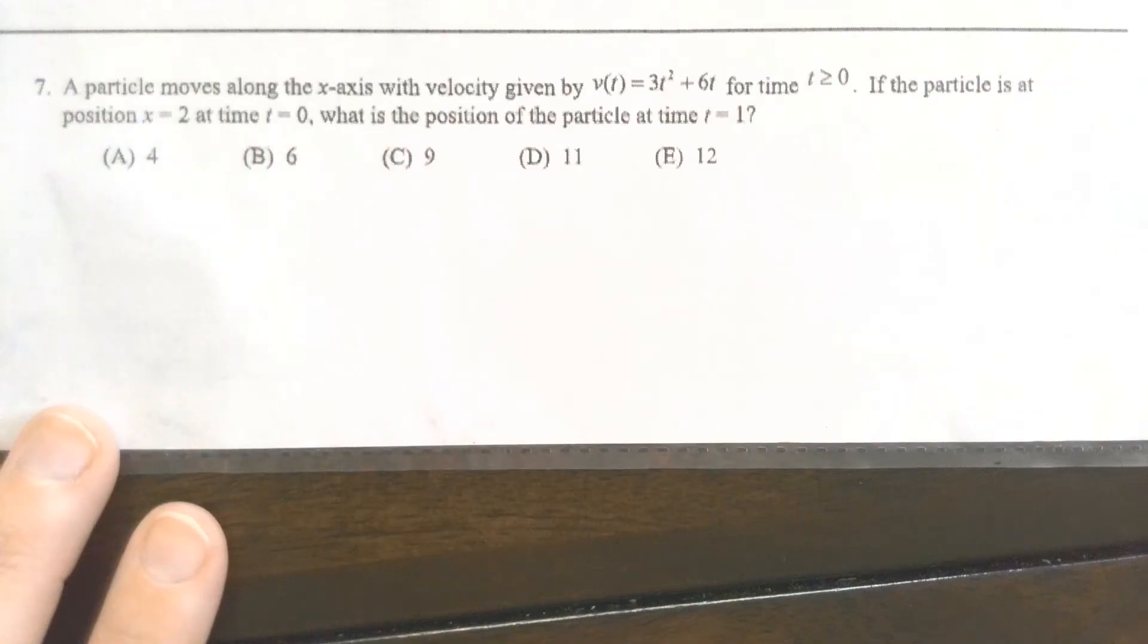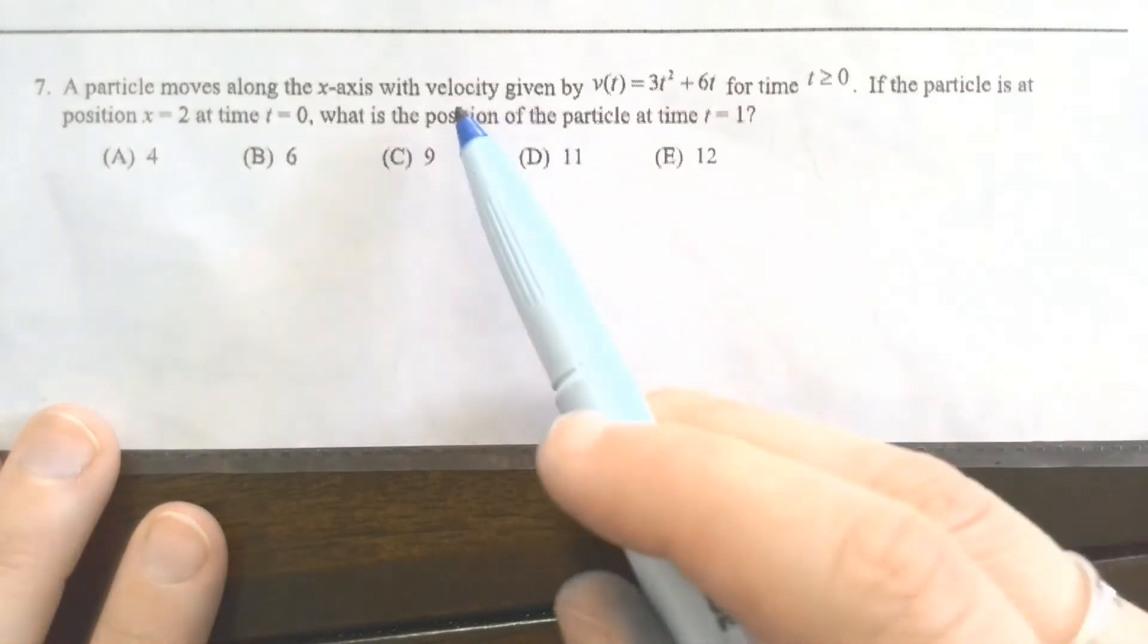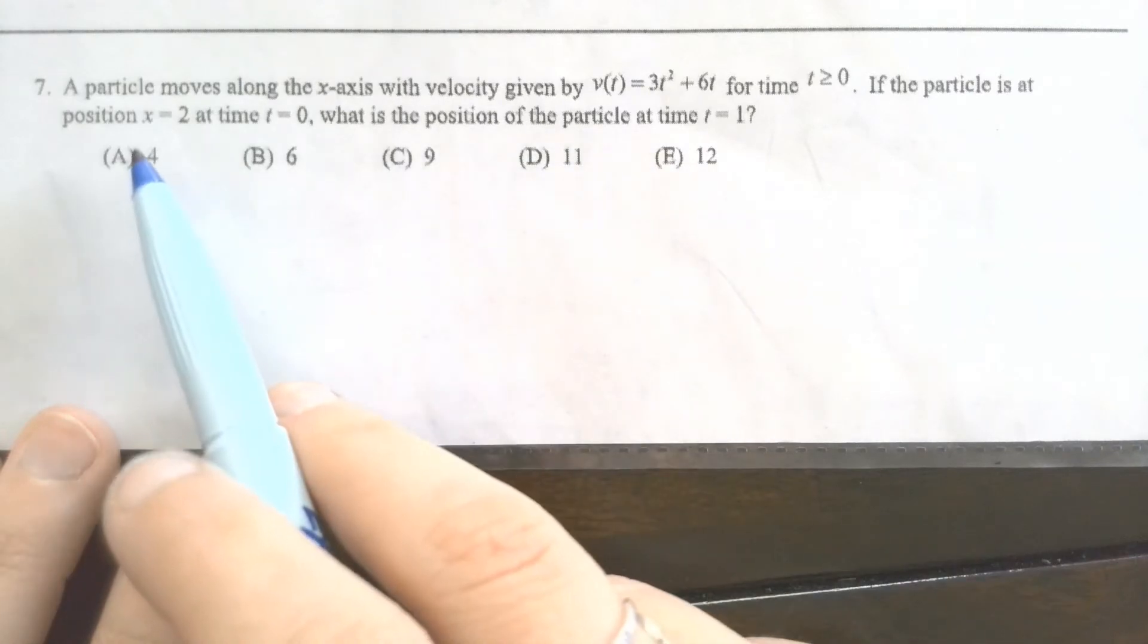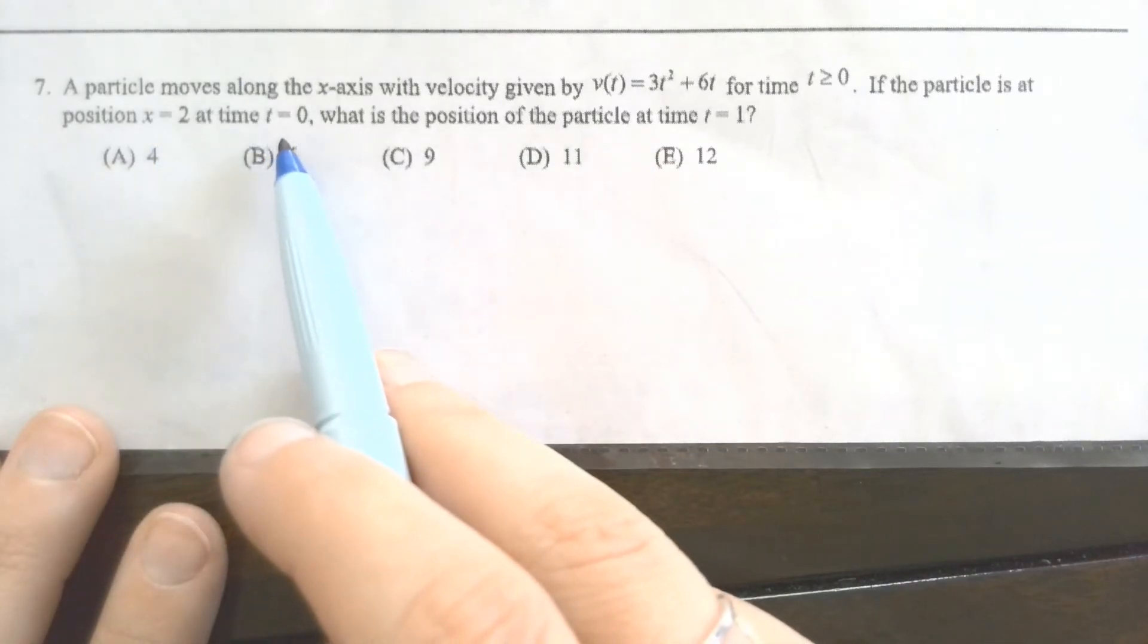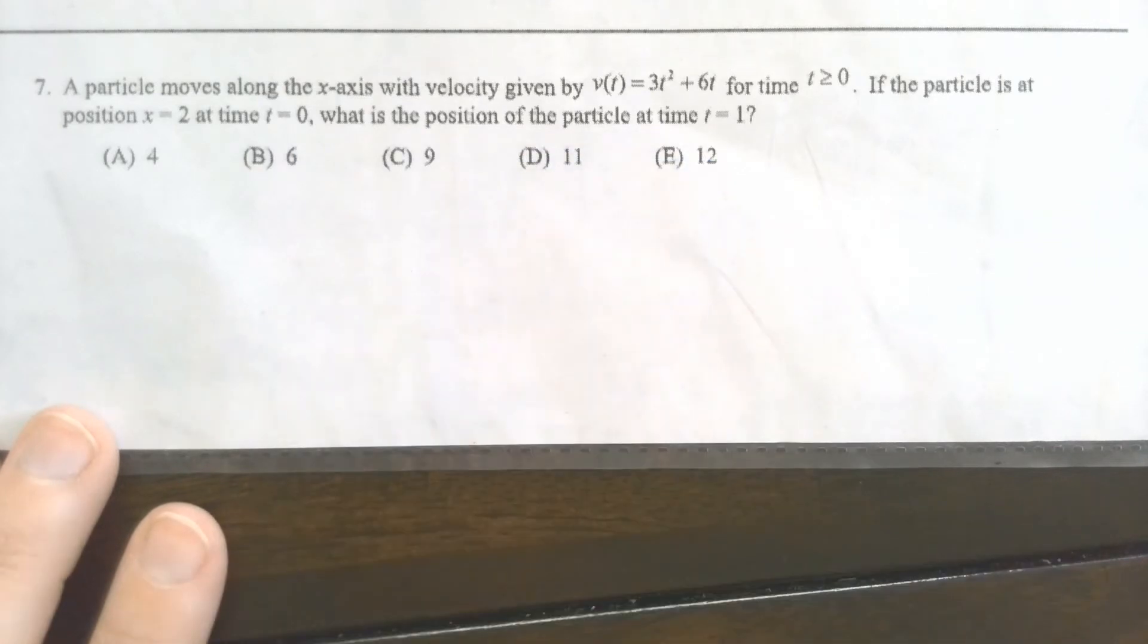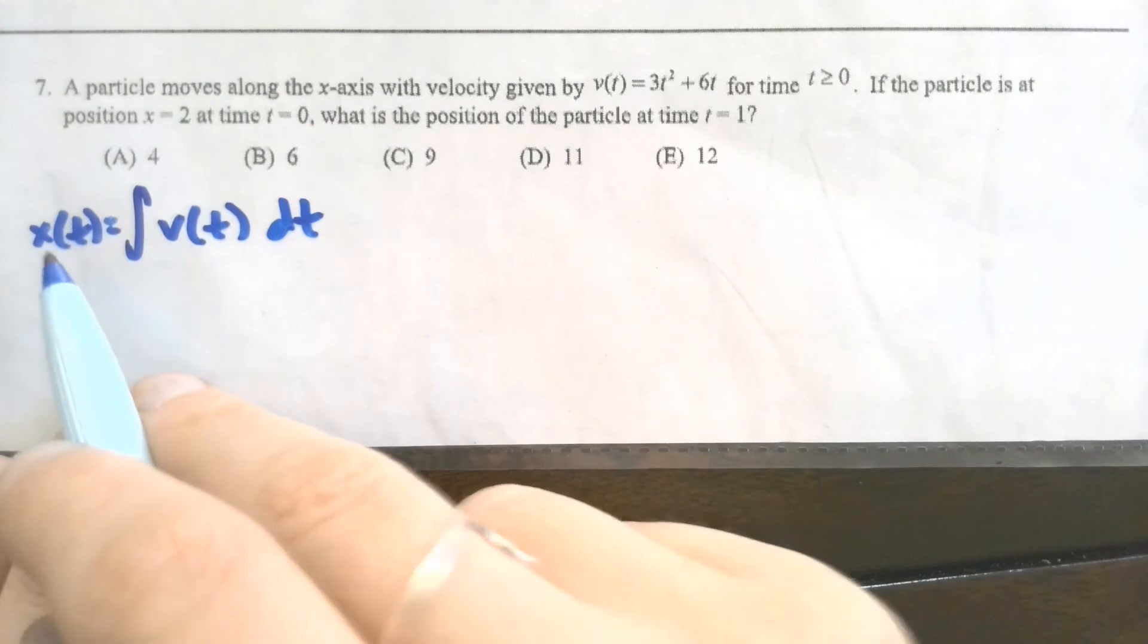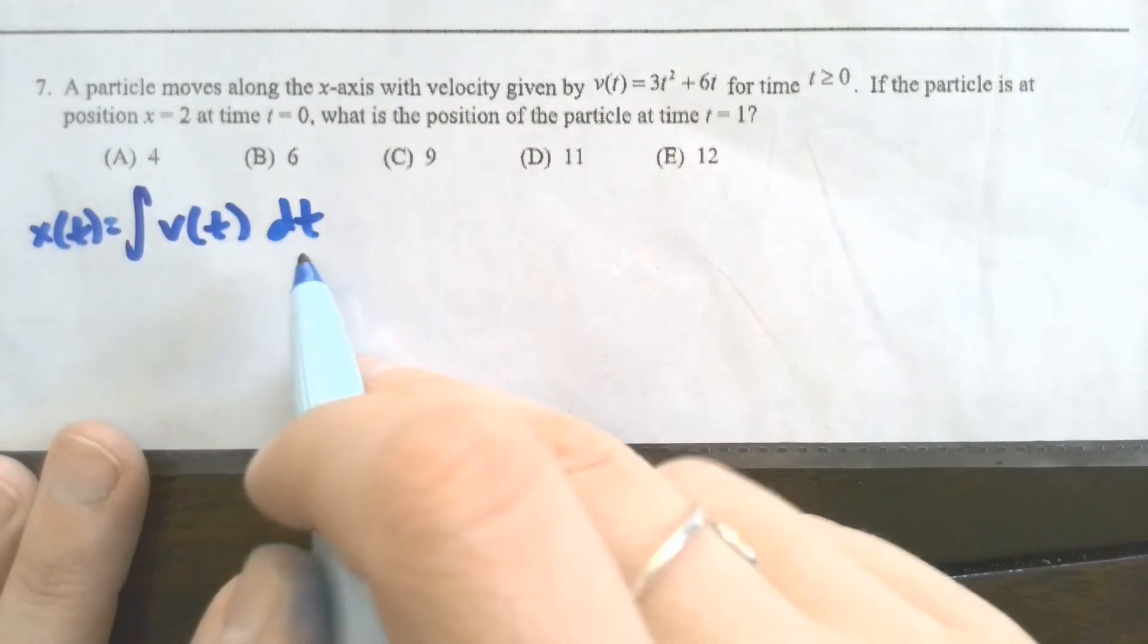In our next example, we're going to get a little bit of integral action. It gives us the velocity function for this particle, and then it tells us that it's at position 2 at time t equals 0, and wants to know a different position when time t equals 1. So first, if I'm talking about position, I need to work backward from my velocity. So my position here is going to be the integral of my velocity.